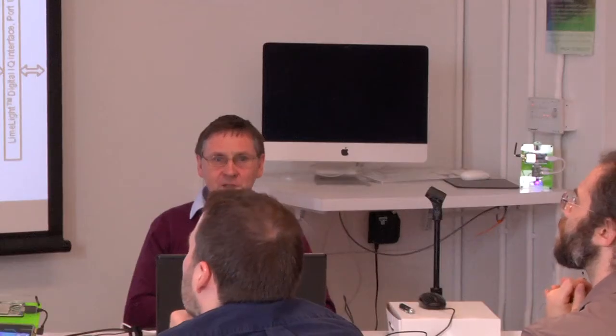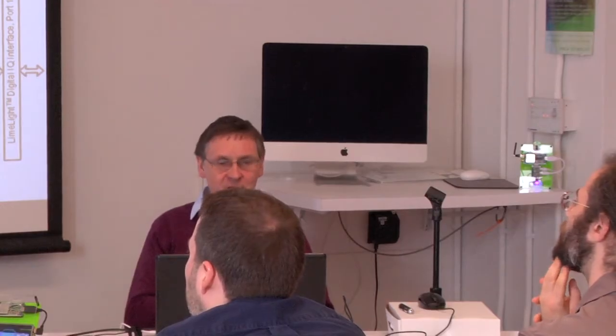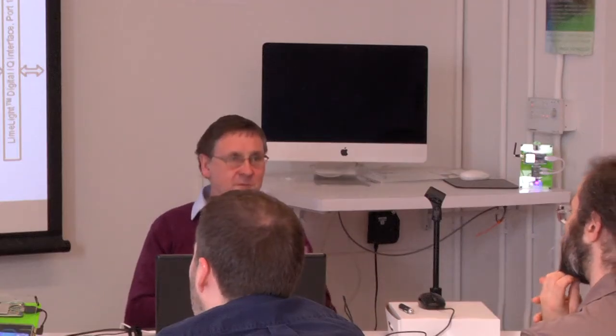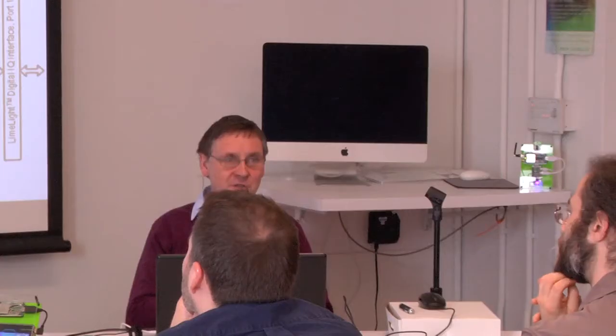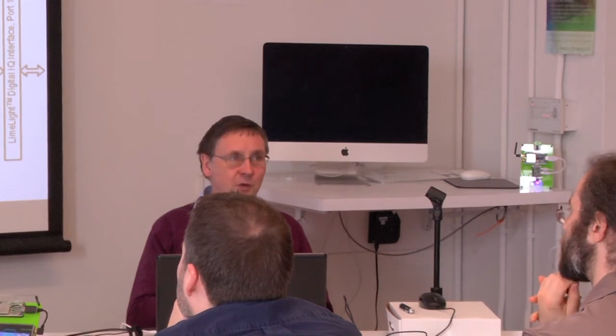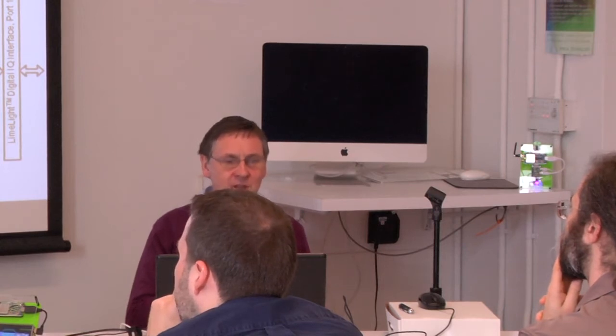The Lime software-defined radio is based on the LMS7002 chip, which is a complicated device — the analog part has over 1,000 control lines. There's also a digital block on top of it. At first sight it may seem absolutely terrifying, but you have a lot of defaults in the software so you don't have to start from zero. You're actually just modifying something that's already working, which makes it quite an easy chip to use once the infrastructure is in place.